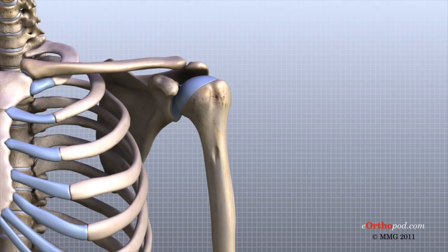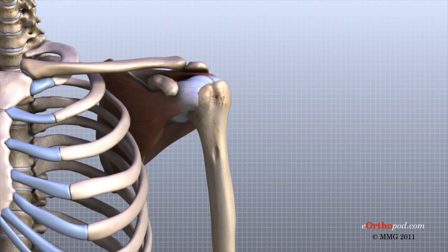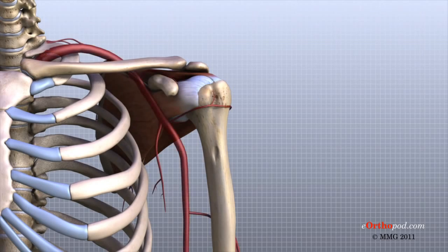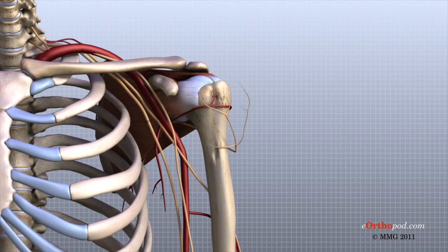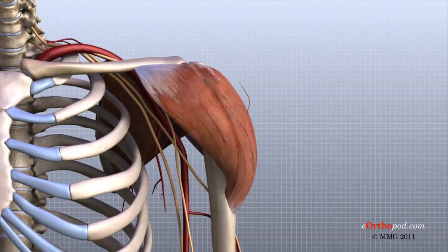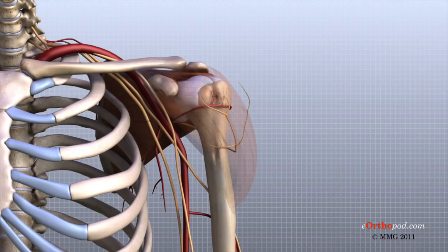Understanding the different parts of the shoulder can help you understand how the shoulder works, how it can be injured, and how challenging recovery can be when the shoulder is injured. The important structures of the shoulder can be divided into several categories.